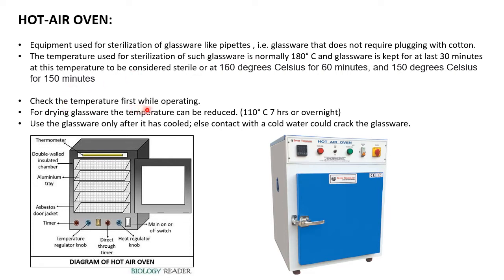When operating the hot air oven, always check the temperature first before opening it. When taking out glassware, try to use oven mittens because the temperature is very high — around 160 to 180 degrees Celsius — and it can cause harm.